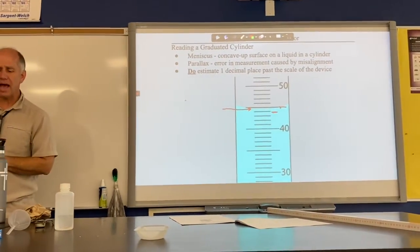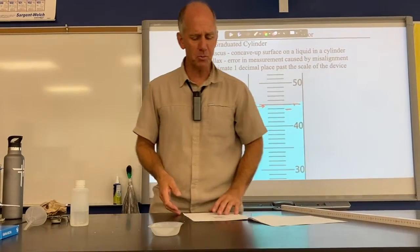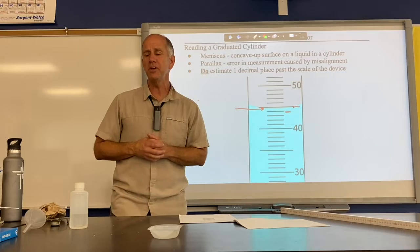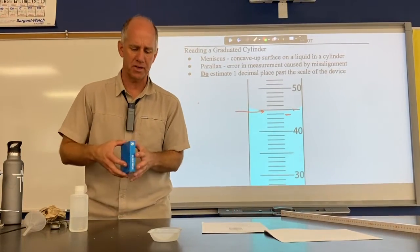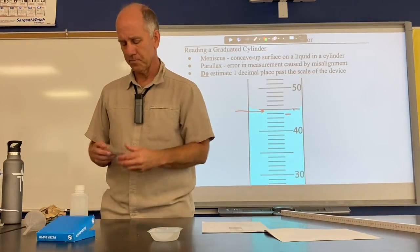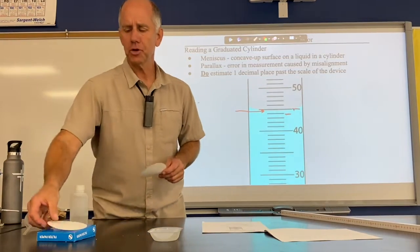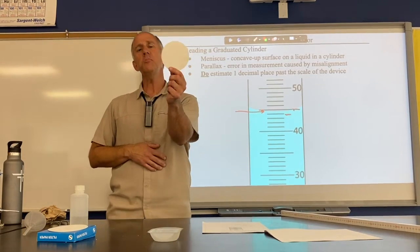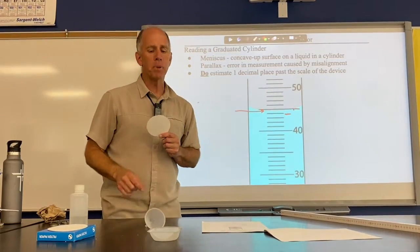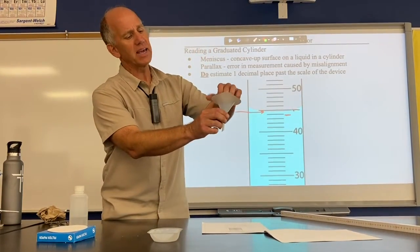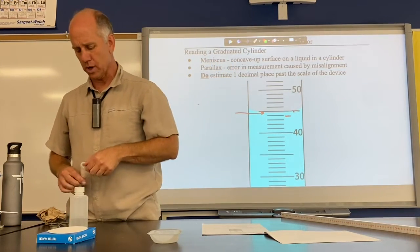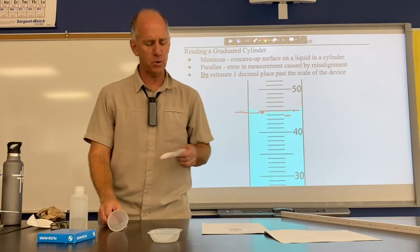So we've now talked about balances, Bunsen burners, and graduated cylinders. We have one more piece of lab equipment to cover: the filter. We use filters to separate solids from liquids. This piece of filter paper will eventually go in this funnel, but we need to figure out how to get it to fit well.